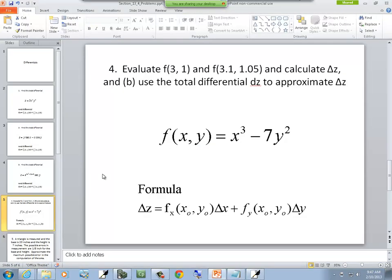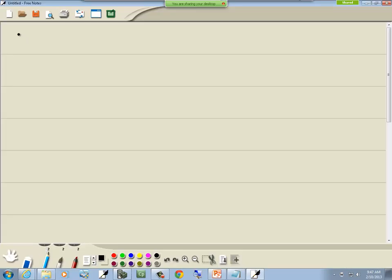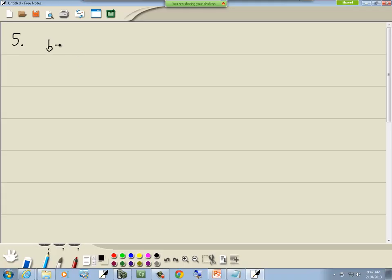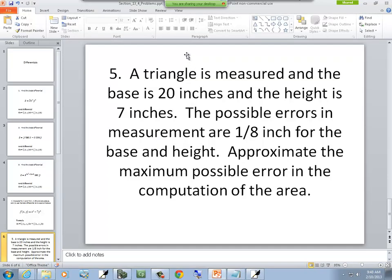Let's look at our last problem. I didn't show this problem in class because I wasn't sure if I could make up a good problem by myself. This one isn't a great one, but it'll give you the idea of how you can use this to help you figure out the maximum possible error. A triangle is measured and the base is 20 inches and the height is 7 inches. Possible errors in measurement are 1/8 inch. Whatever device we have has this possibility of error.